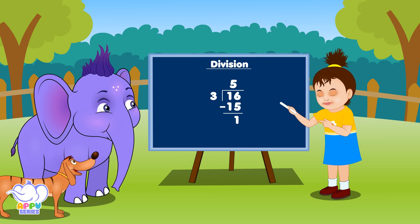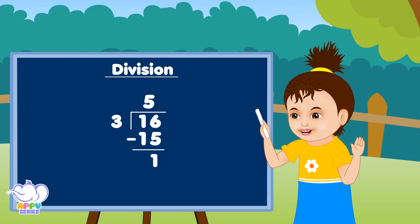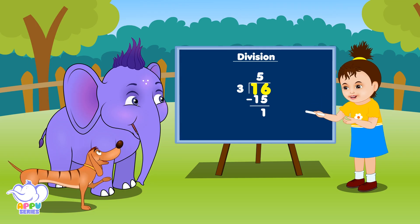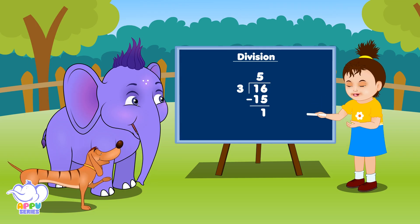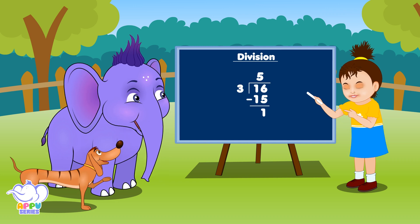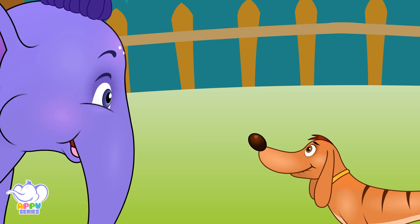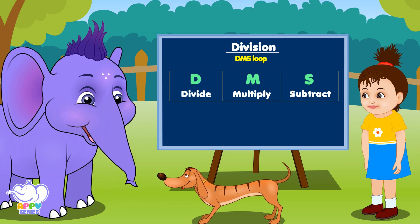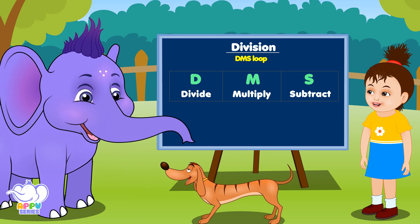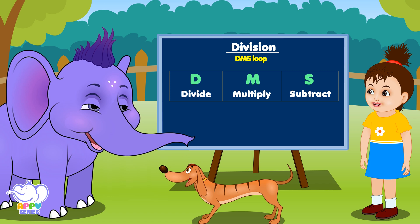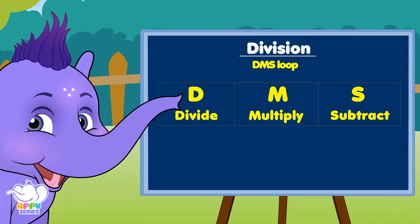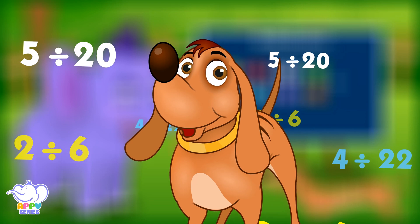Answer these questions super quick. What's the quotient? 5. What's the dividend? 16. What's the divisor? 3. What's the remainder? 1. Do you follow the same steps for all numbers? Yes — DMS loop is something to keep in mind: Divide, Multiply, and Subtract are the steps that you follow.